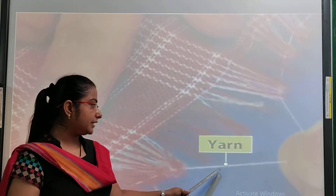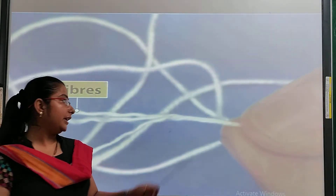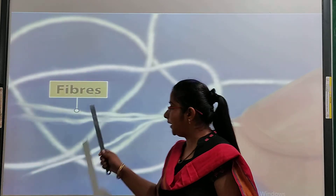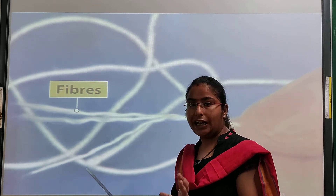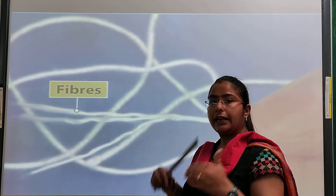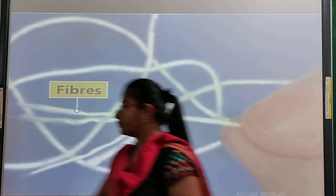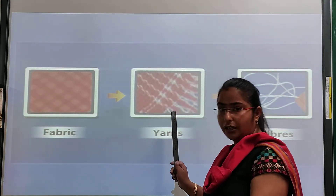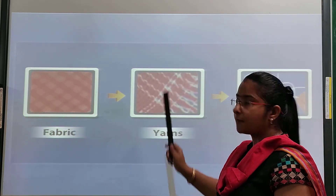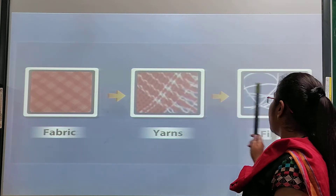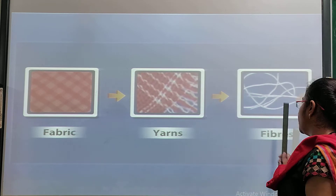When you split the yarns, you see that yarn is still made up of even thinner threads. Those thin threads are known as fibers. So your fabric is made up of yarn, and yarn is made up of small threads. When you look closely, the fabric is made of small threads called yarn, and yarn is further made of thin threads called fibers.